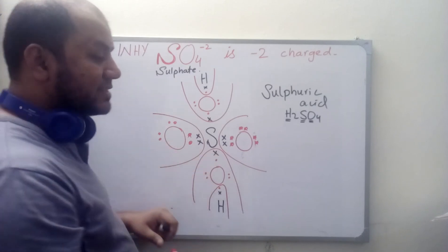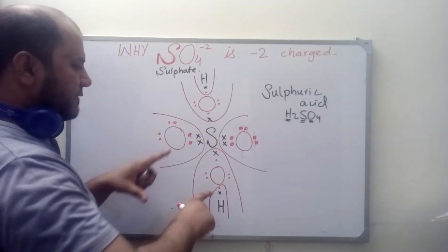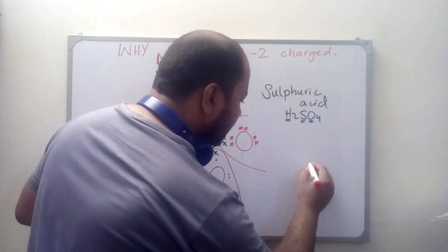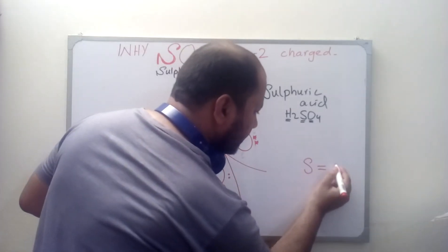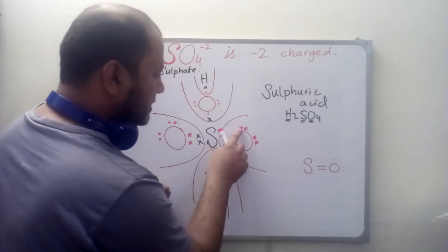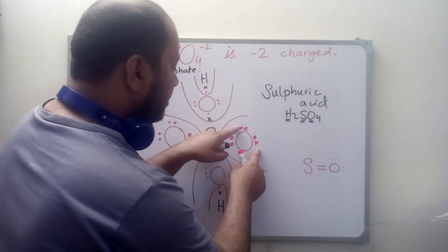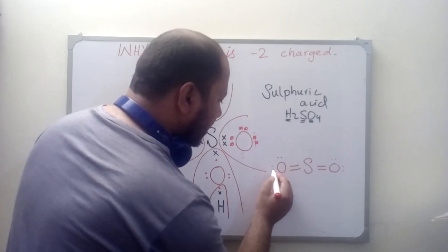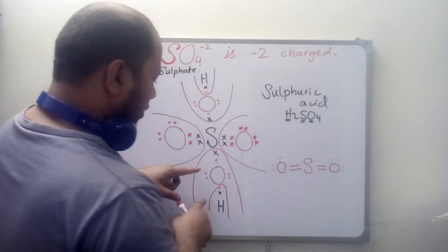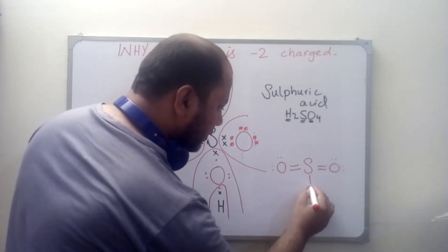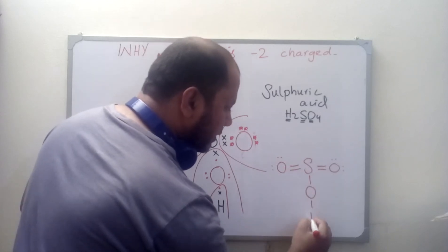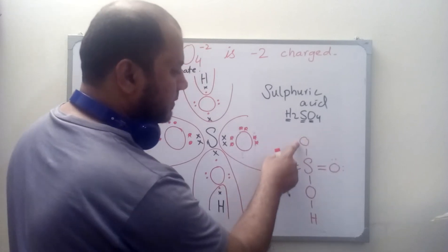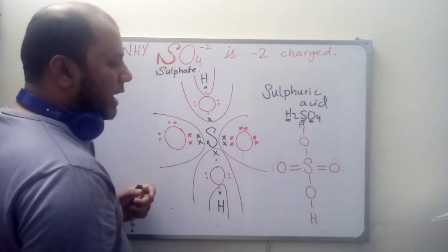This is the structural formula of sulfuric acid. In a covalent bond structure it looks like this: sulfur is doubly bonded with one oxygen which has two lone pairs. Sulfur is also doubly bonded with another oxygen with two more electrons as a lone pair. Then oxygen is singly bonded with sulfur and singly bonded with hydrogen. Again, another oxygen is singly bonded with sulfur and singly bonded with hydrogen — giving us H₂SO4.